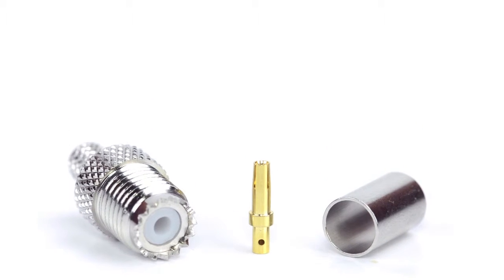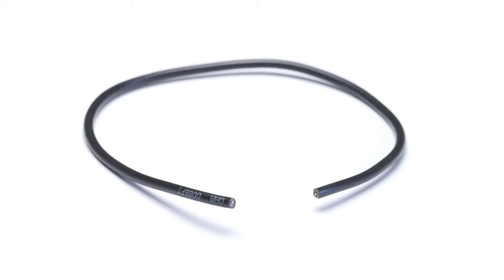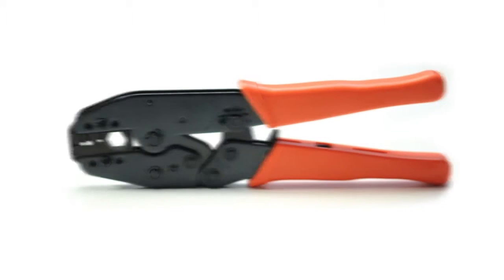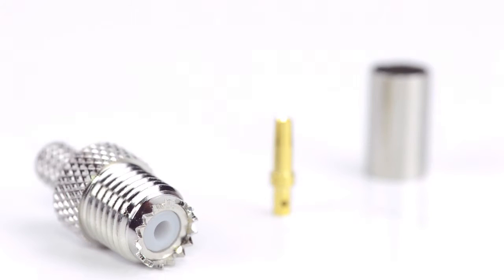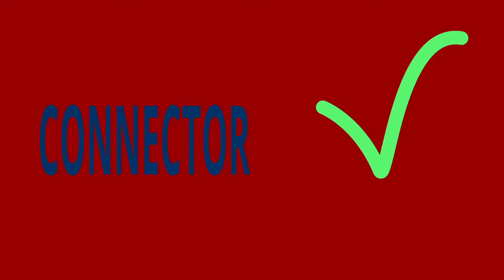For this installation you will need a coax stripper, coax cable, a soldering iron, a crimp tool, and the Mini UHF connector. Keep in mind you will want to make sure that your coax stripper, crimp tool, and connector match the coax cable that you are installing.